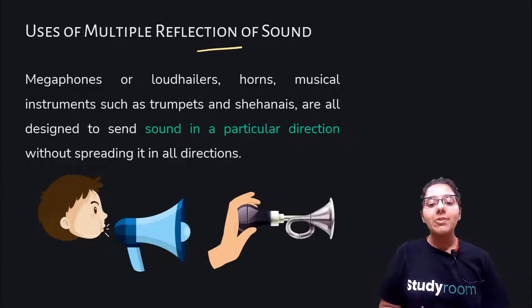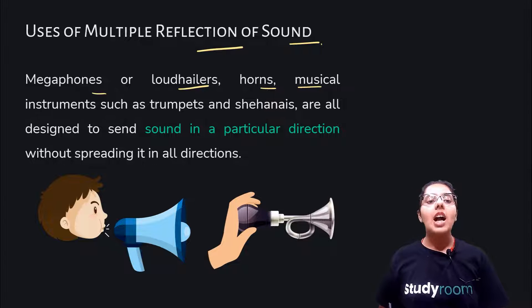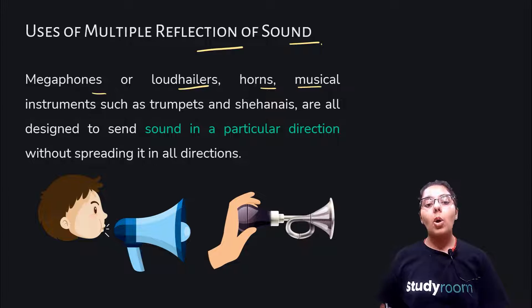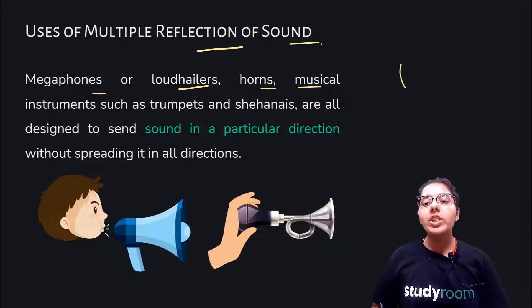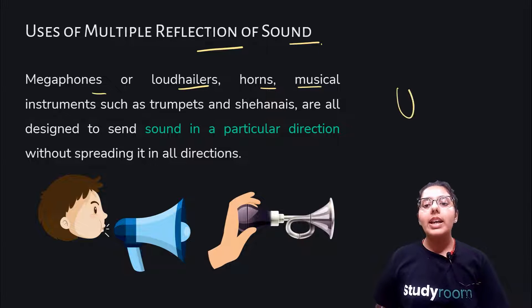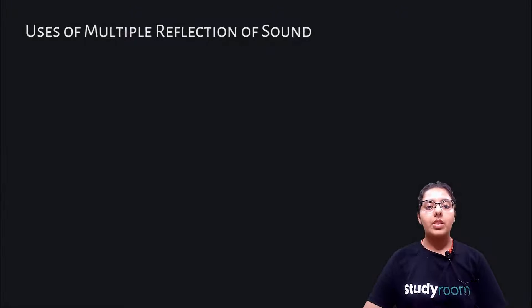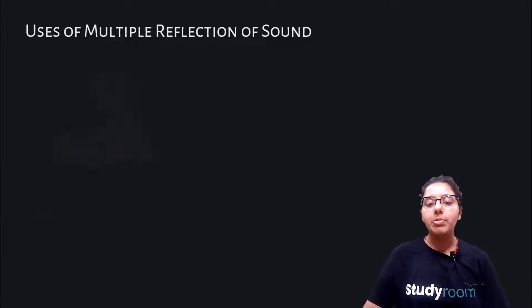Uses of multiple reflection of sound: megaphones or loud hailers, horns, musical instruments such as trumpets and shehanais are all designed to send sound in a particular direction without spreading it in all directions. These shapes allow the voice to go in a particular direction rather than spreading out everywhere. These are examples of multiple reflection.